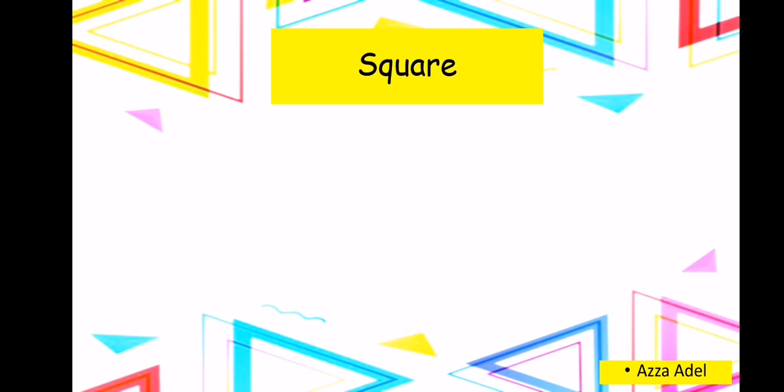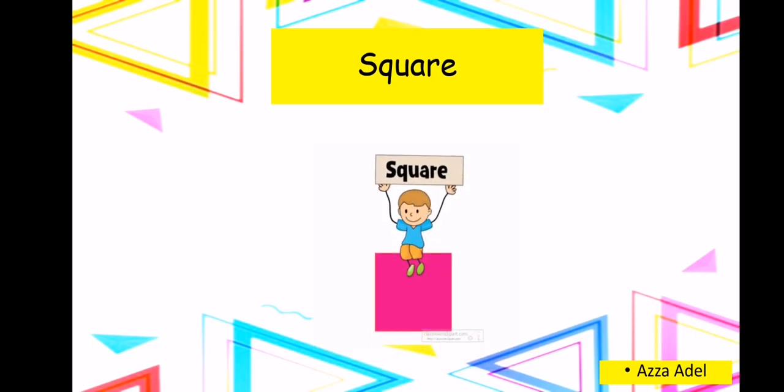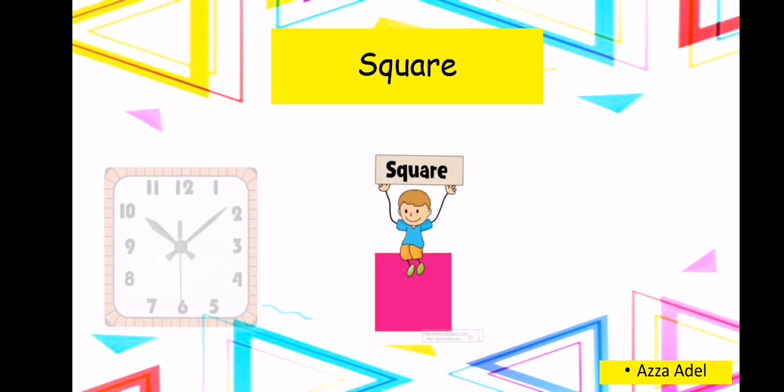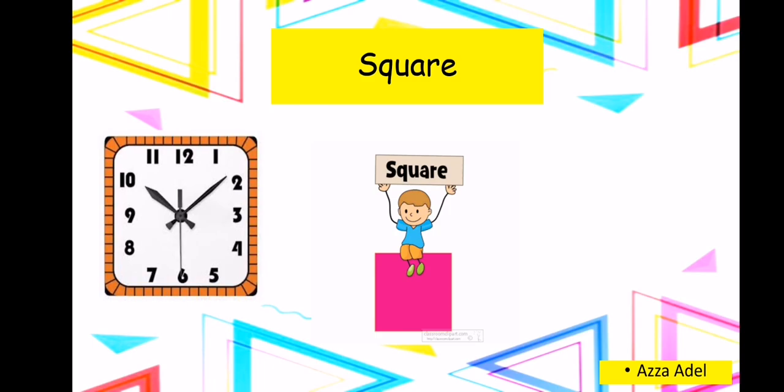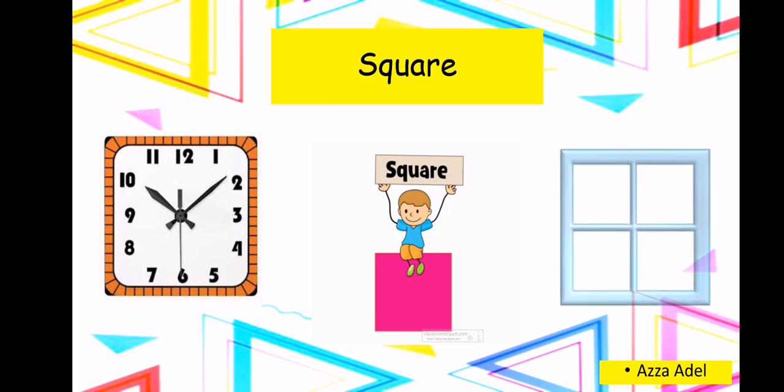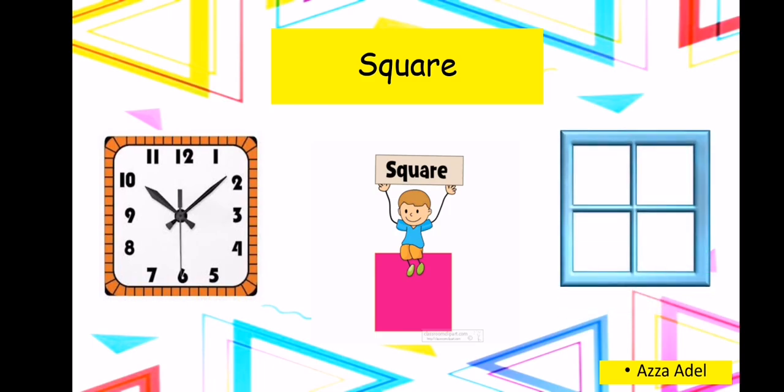Square. A square looks like a clock and a window. It has four sides. Can you look around you and find something that looks like a square?